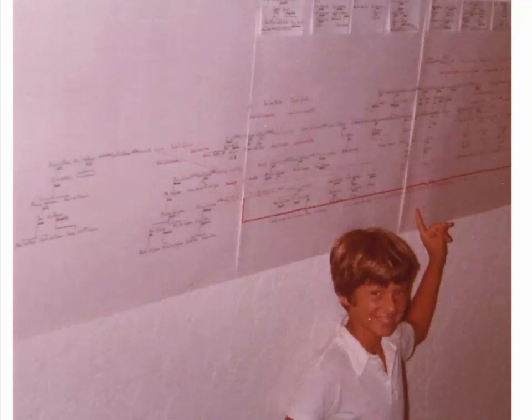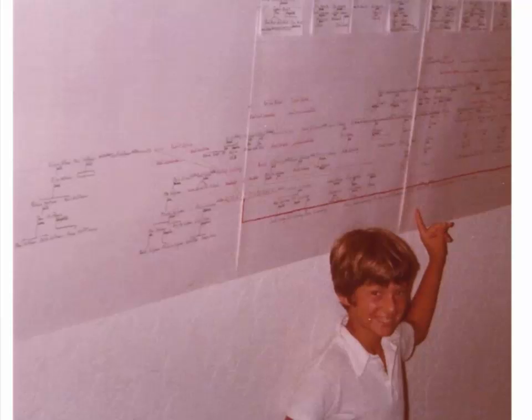I attended my first IAJGS conference when it was in Los Angeles in the 1990s — it happened to be across the street from my law office. I attended the meeting where we plotted the creation of the Austria-Czech Special Interest Group. There was a Greater Germany group and a Greater Hungary group, and Austria had been sort of obliterated. So we carved out the Austrians and Czechs and made the Austria-Czech Special Interest Group. Our group now has something like 1,400 members on JewishGen.